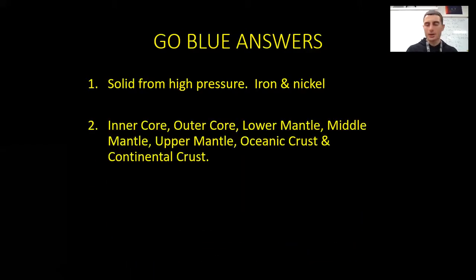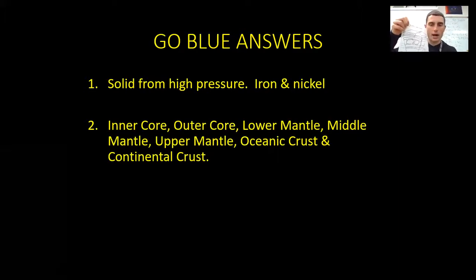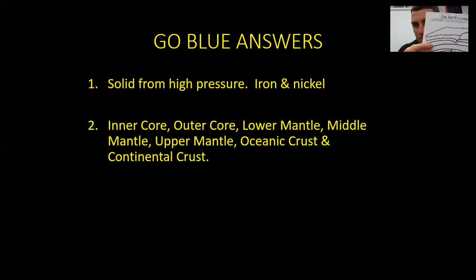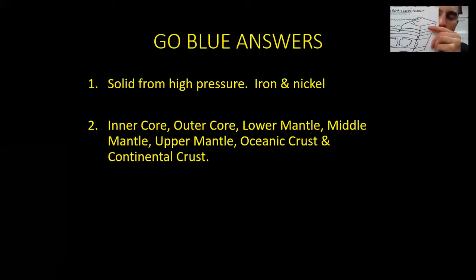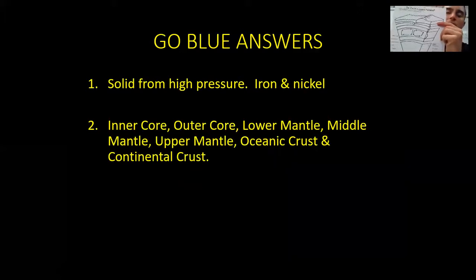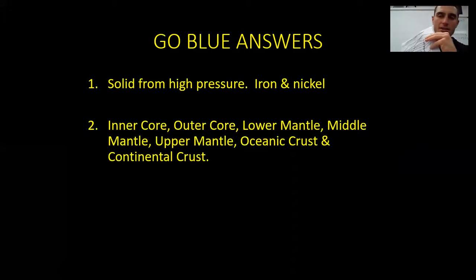Number two: Easy. Just use this drawing. Inside out, work from bottom to top: inner core, outer core, lower mantle, middle mantle, upper mantle. And then some new stuff — the crust. You're going to have the thinner, more dense layer called oceanic crust. And then you're going to have the more expanded layer — that's going to be the continental crust, the highest layer. Continents always go above the ocean.